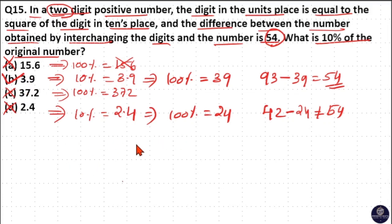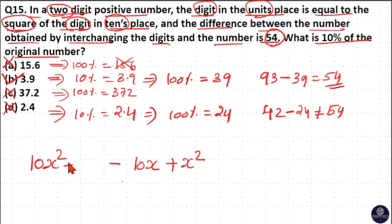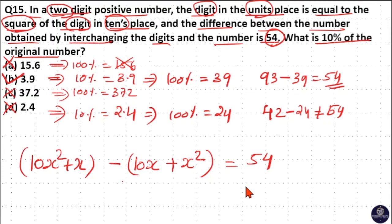You can also solve using number system. If the tens-place digit is x, then the unit digit is x². So the original number is 10x + x². The interchanged number is 10x² + x. Taking the difference: (10x² + x) − (10x + x²) = 54. Simplifying: 9x² − 9x = 54, so x² − x − 6 = 0, giving (x + 2)(x − 3) = 0. Since x cannot be −2, x = 3. The number is 10(3) + 9 = 39, confirming the answer.